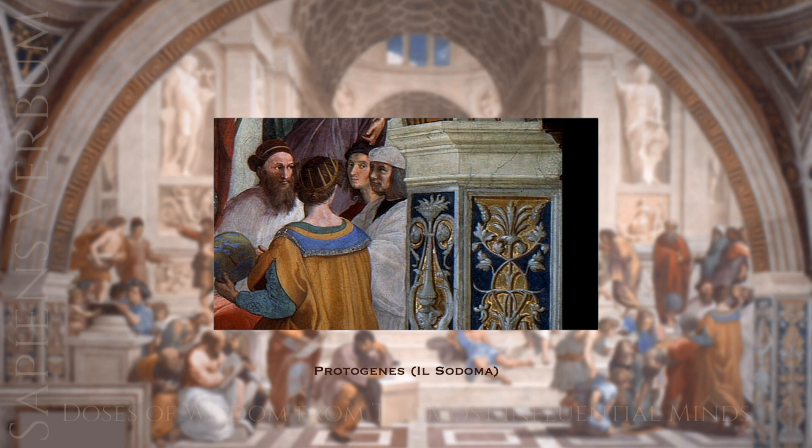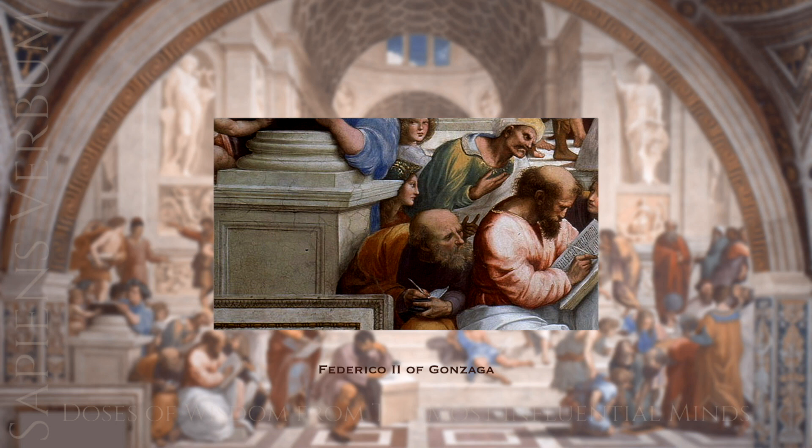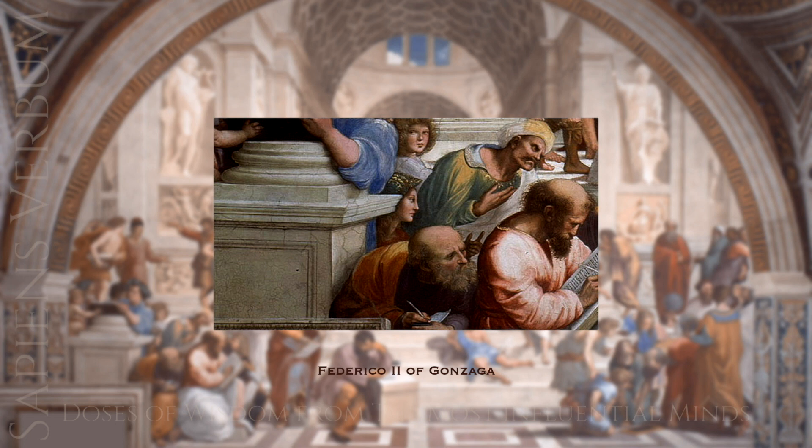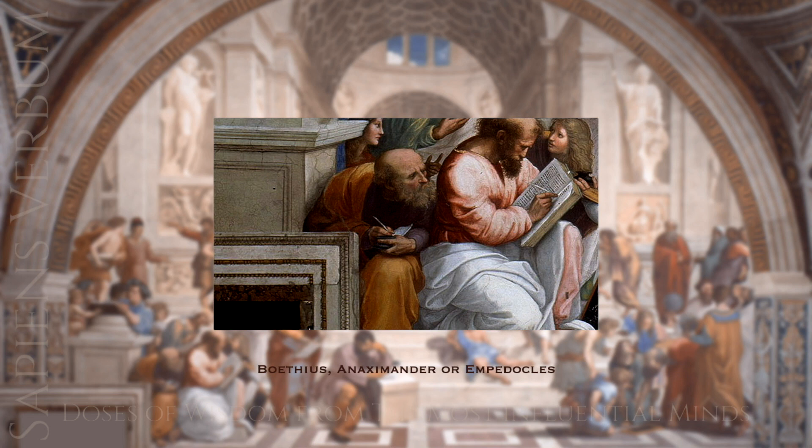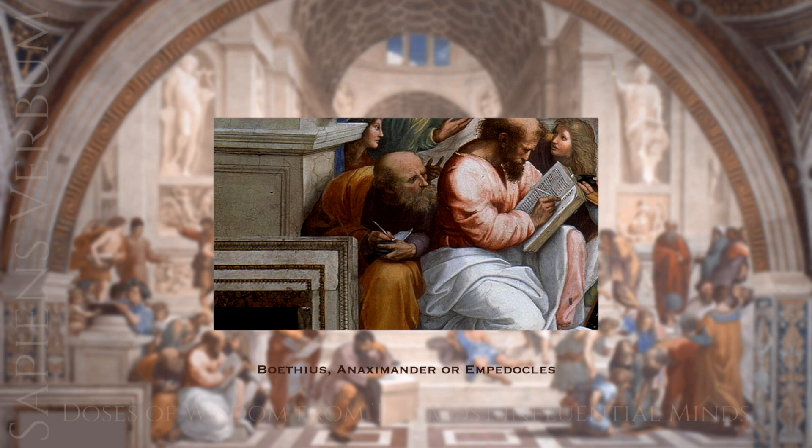Federico II of Gonzaga was a Renaissance patron of the arts who commissioned works from artists such as Mantegna and Giulio Romano, and was also a noted military commander and diplomat. Boethius was a philosopher and statesman in the late Roman Empire, known for The Consolation of Philosophy, which explores themes of fate, free will, and the nature of happiness.